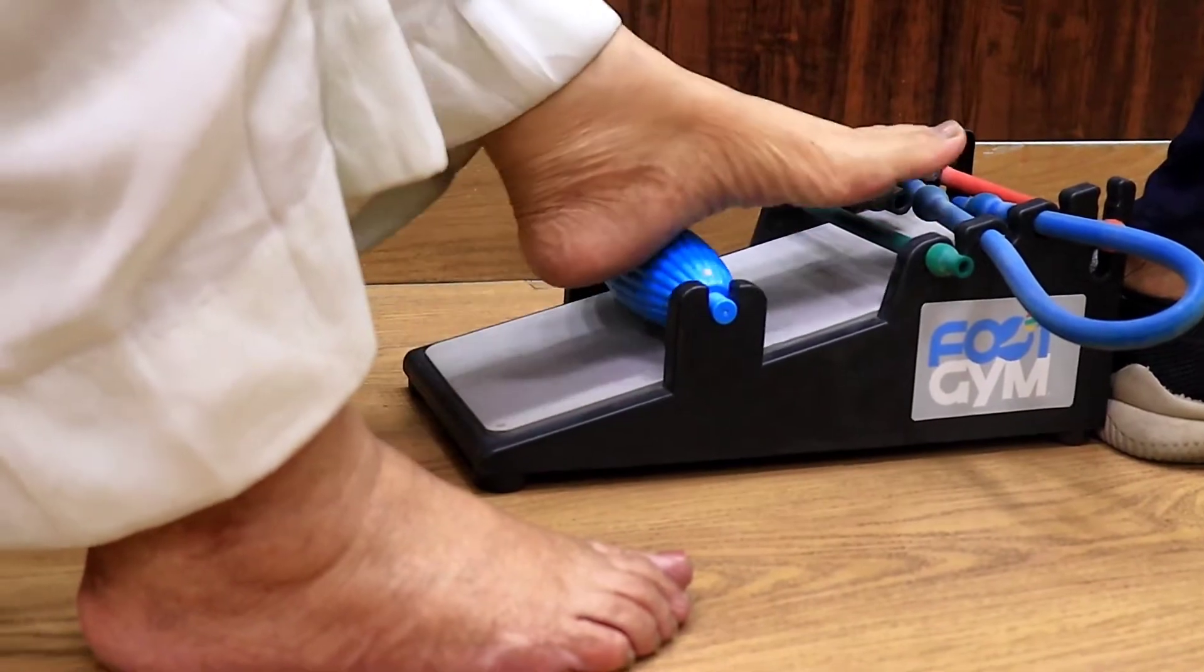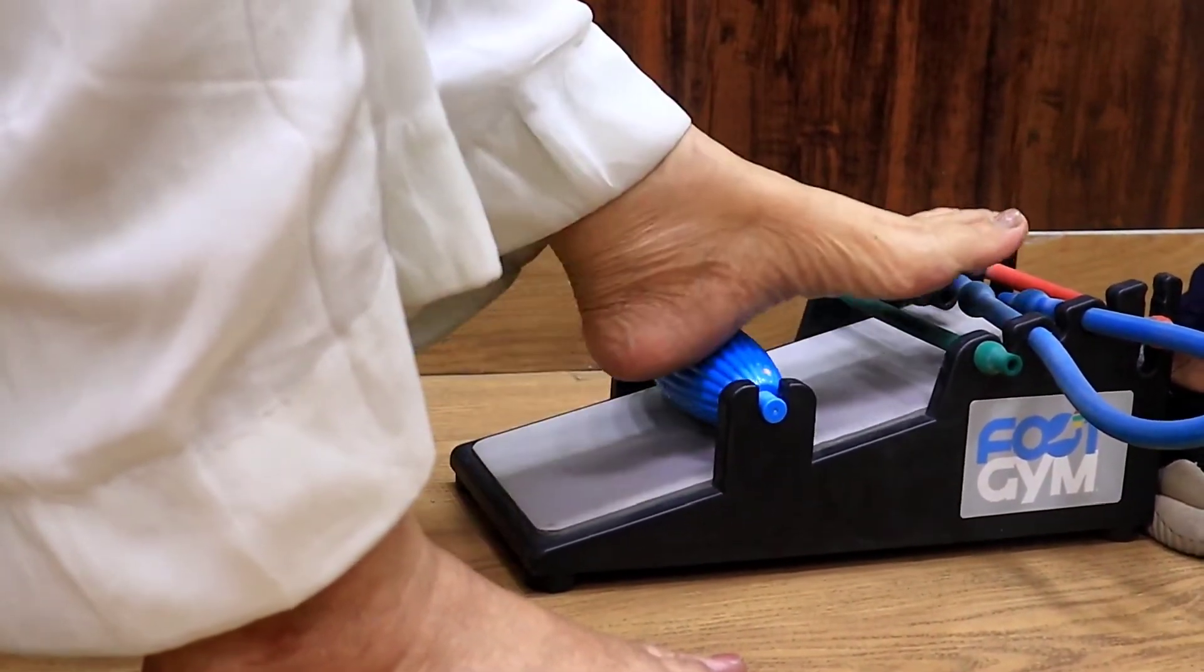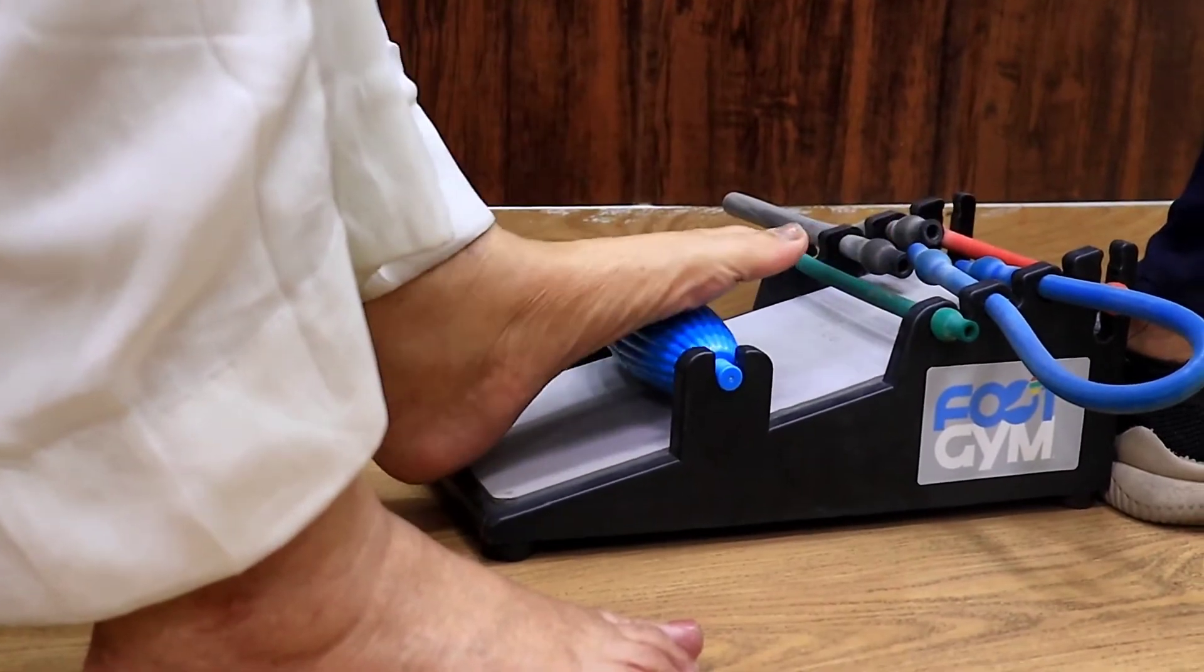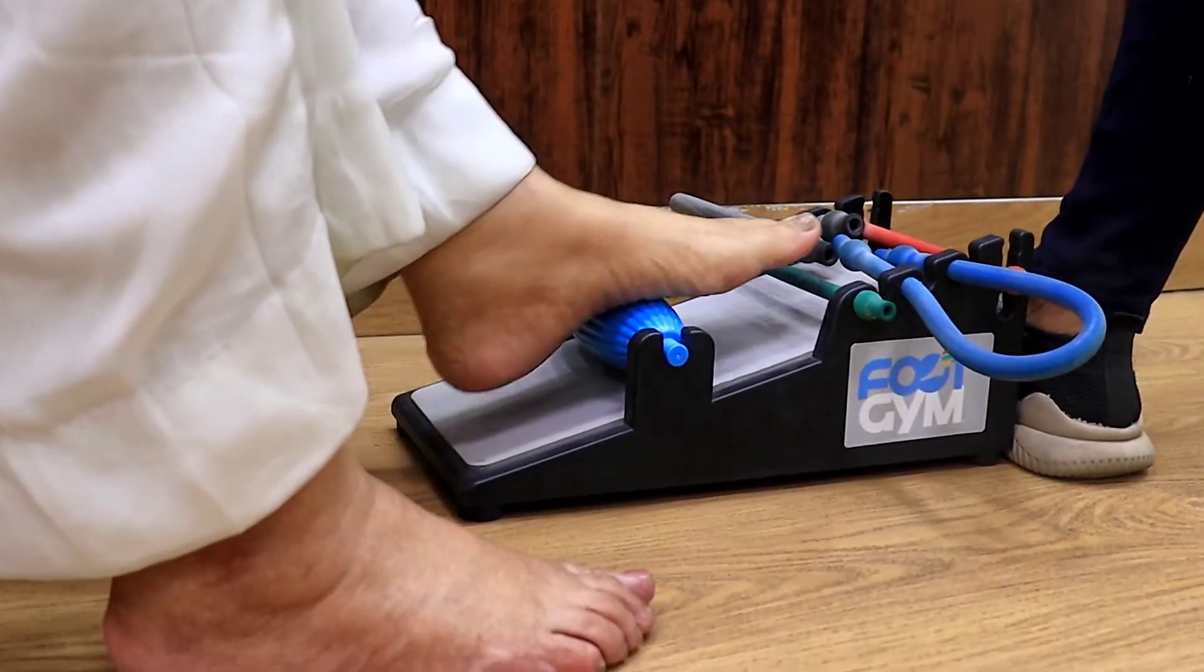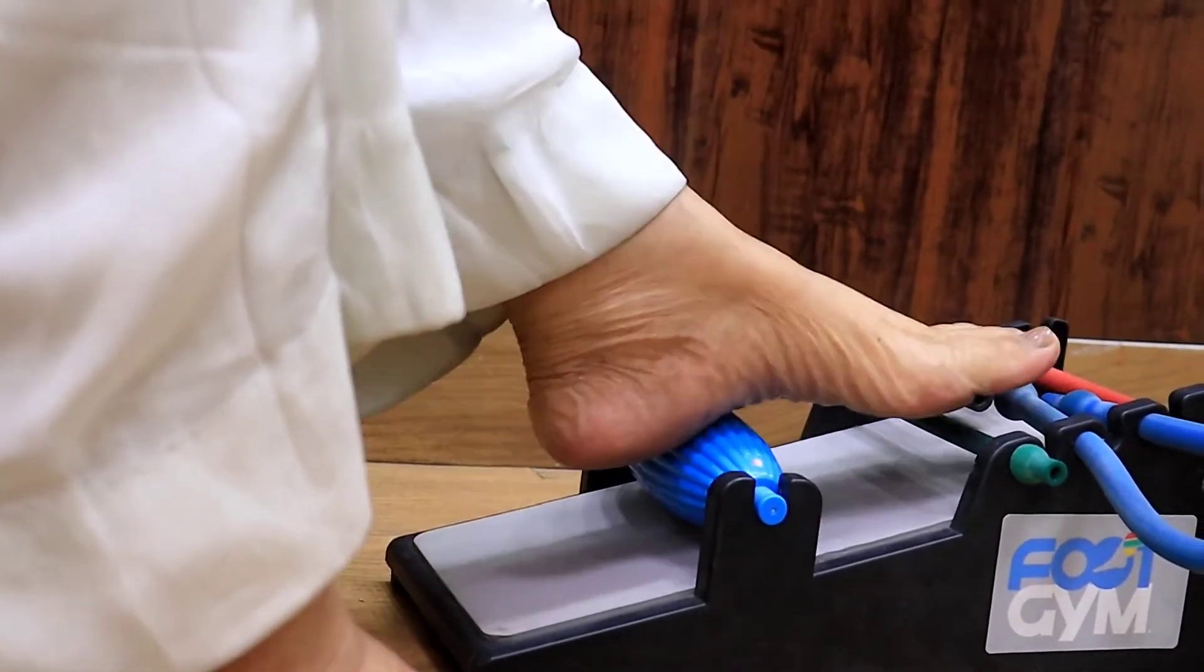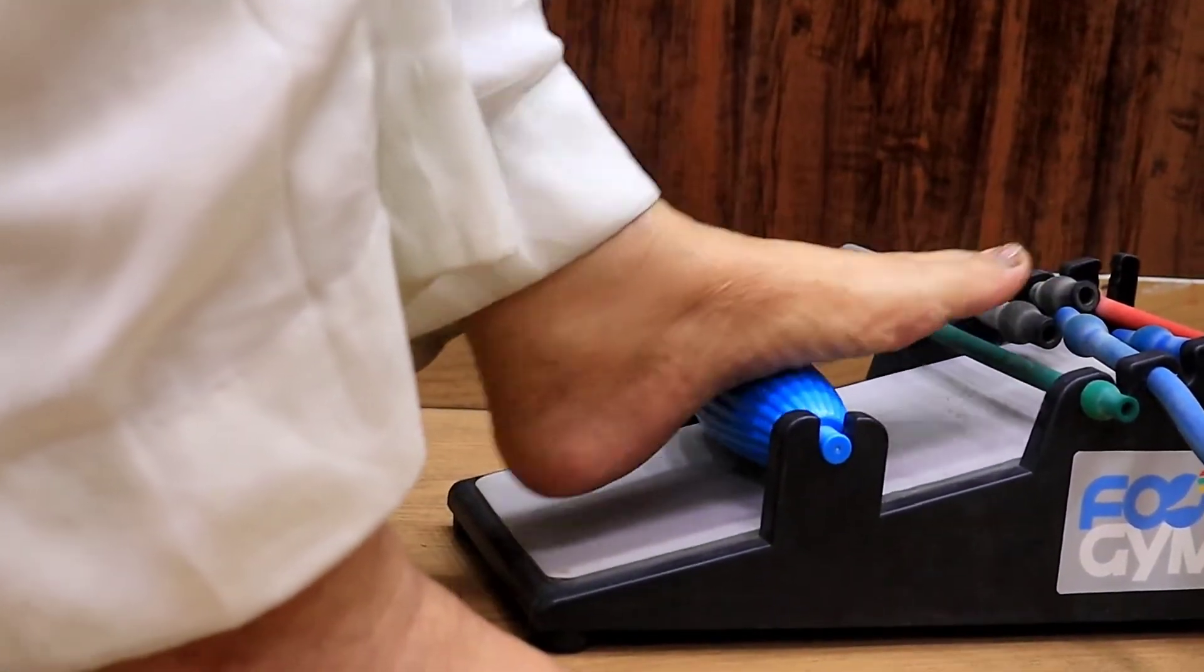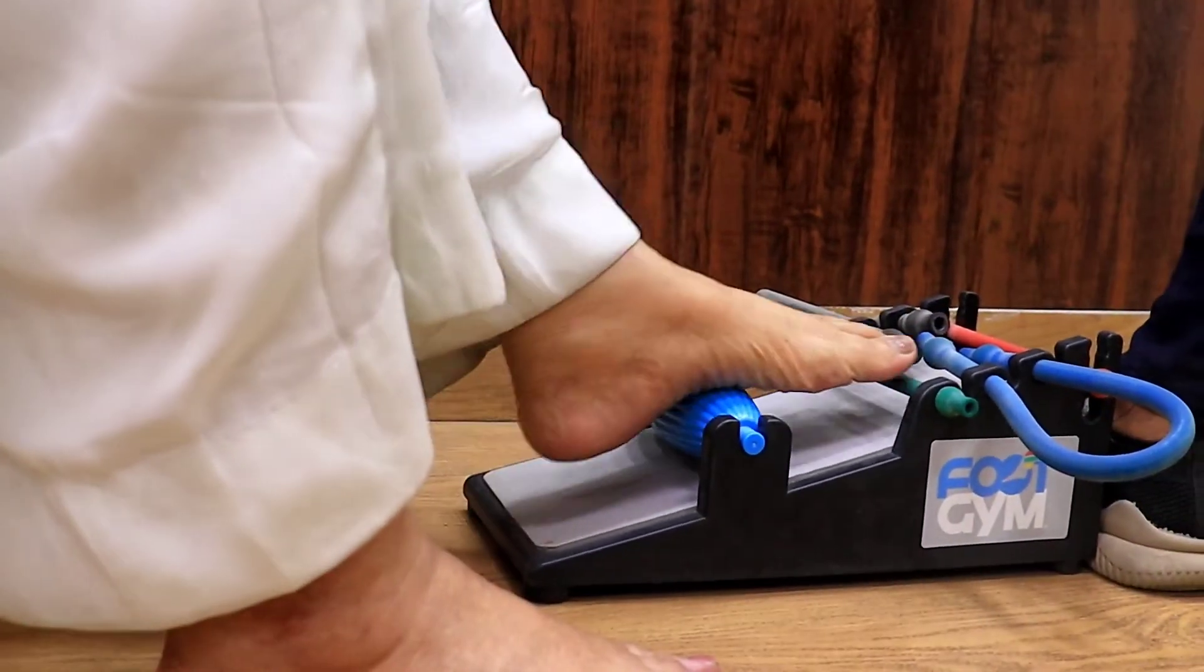In case you have this sort of thing at home, it's called a foot gym. Or what you can try is using a belan, the desi belan which we have at home for making chapatis, rotis, and dosas. You can make use of that also to release the fascia and muscles in the foot.